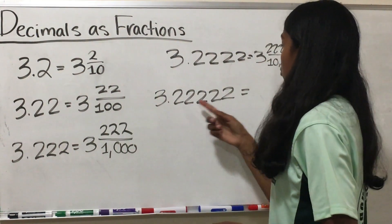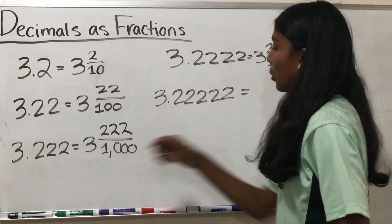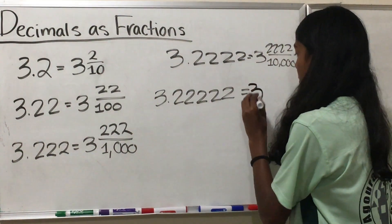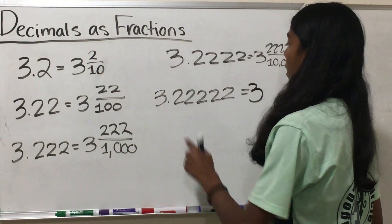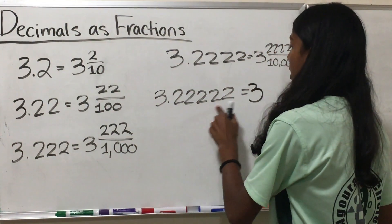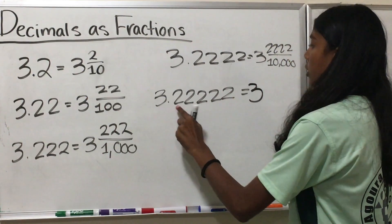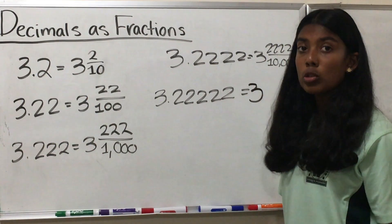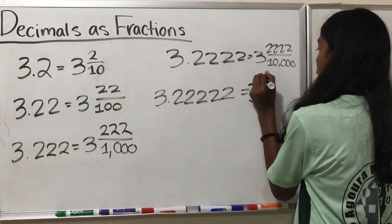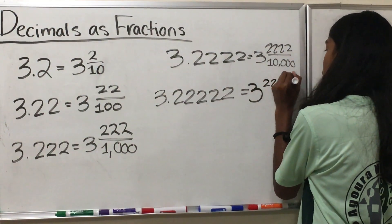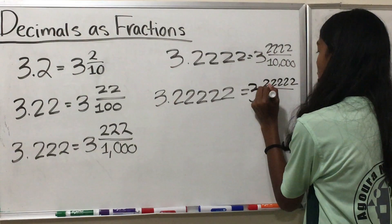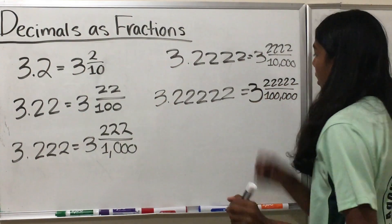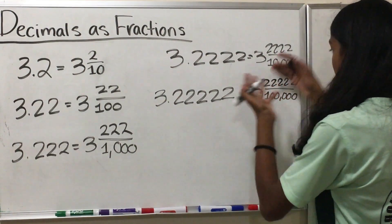As a little exercise, let's try 3.22222 — that's 5 twos. We're going to keep the 3 the same because it's the whole number part, and then we change the decimal part to a fraction. There are 5 twos, meaning 5 zeros in the denominator. So we write 22222 as the numerator and 100000 as the denominator, giving us 3 and 22222 over 100000.